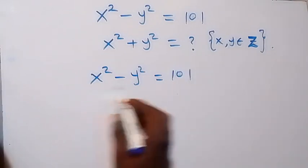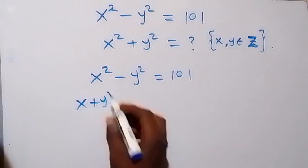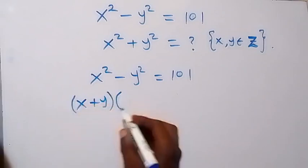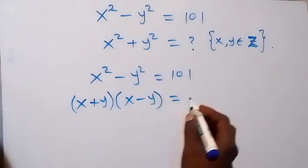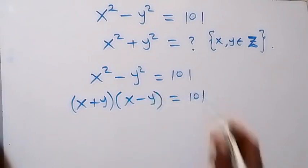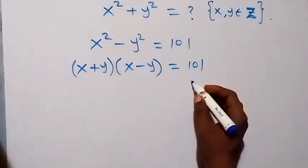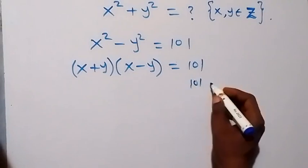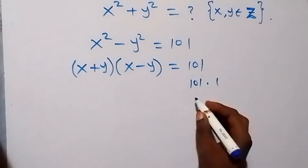this follows difference of two squares, so (x+y)(x-y) = 101. And 101 can be separated as 101 times 1, or you can write it